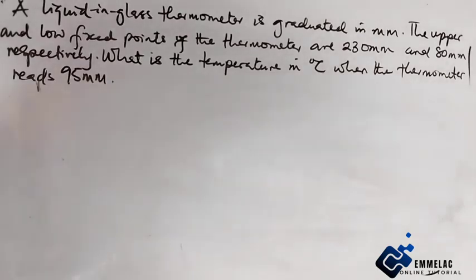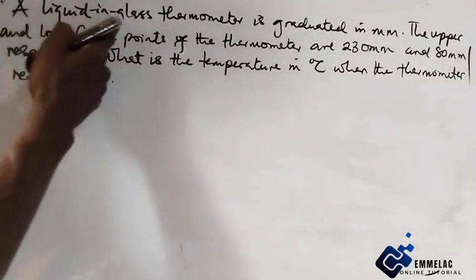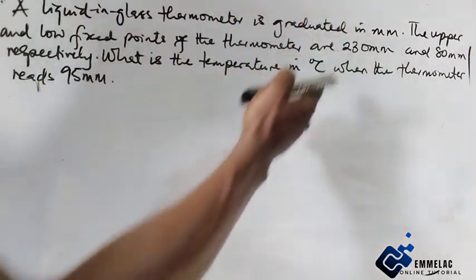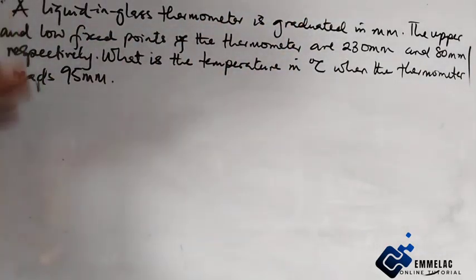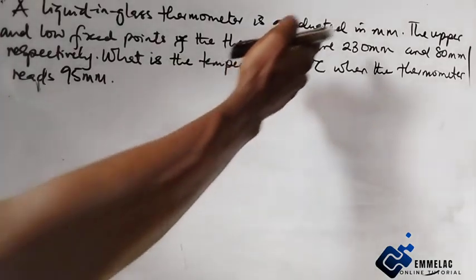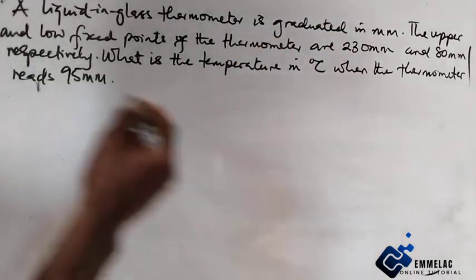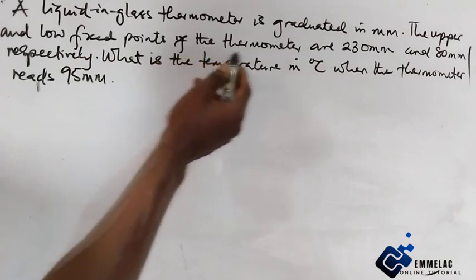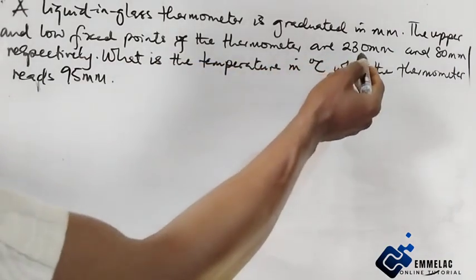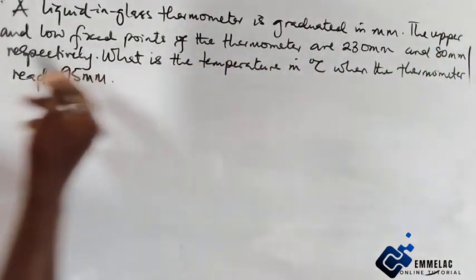Alright, now let's get started. A liquid-in-glass thermometer is graduated in millimeters, which means the readings are in millimeters. The upper and lower fixed points of the thermometer are 230 millimeters and 80 millimeters respectively.